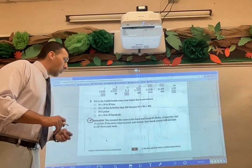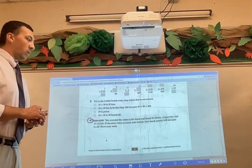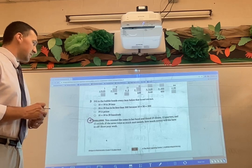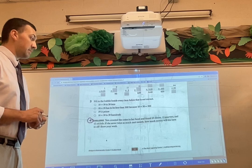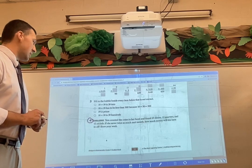Tara counted the coins in her bank and found twenty-five dimes, twelve quarters, and fifteen nickels. She saves twice as much next month. How much money will she have in all?